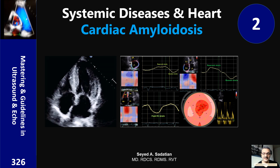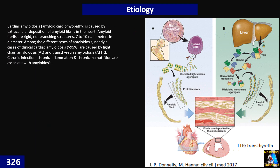Welcome to Mastering and Guideline in Ultrasound and ECHO. Amyloidosis is an immunogenetic disorder caused by the deposition of extracellular amyloid fibrils, and it involves many organs including the heart, kidney, and nervous system — but it can involve any organ in the body. Among them, the heart is most often involved, and we call this cardiac amyloidosis or amyloid cardiomyopathy.